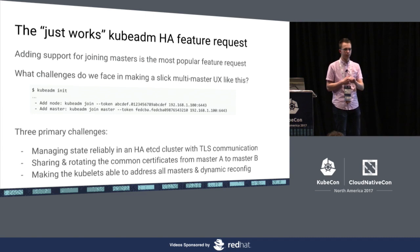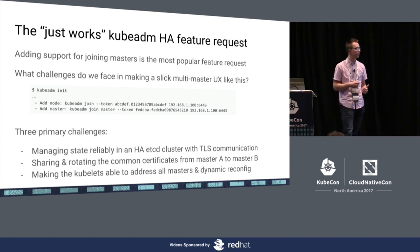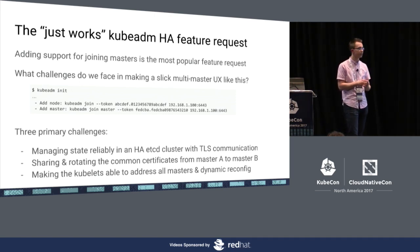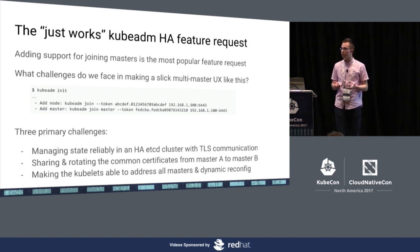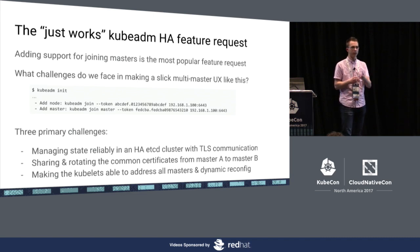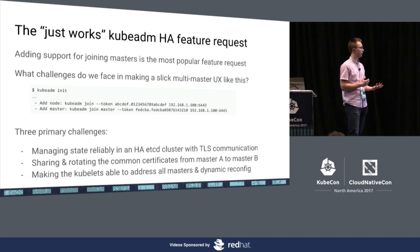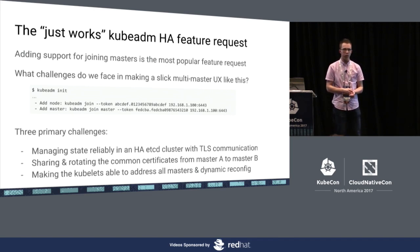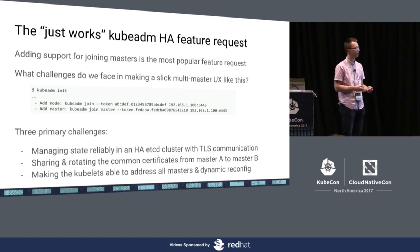We can't know in advance what the desired cluster state will look like — we could start with one master for a week, add nodes, then a month later want two, three, or five masters. So we have to dynamically reconfigure etcd, which is challenging. The second challenge is sharing and rotating the common certificates between all masters. For example, the service account private key must be the same in all controller managers, otherwise pods will start erroring. These keys have to be present on all masters and rotated simultaneously when rotation happens.